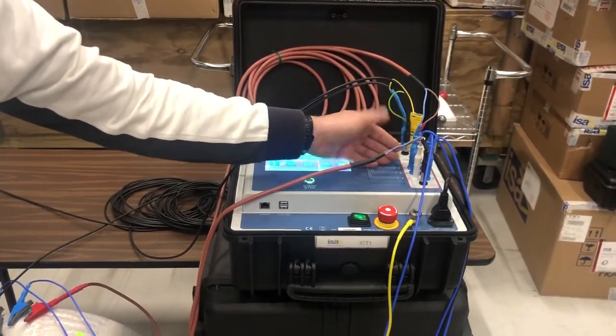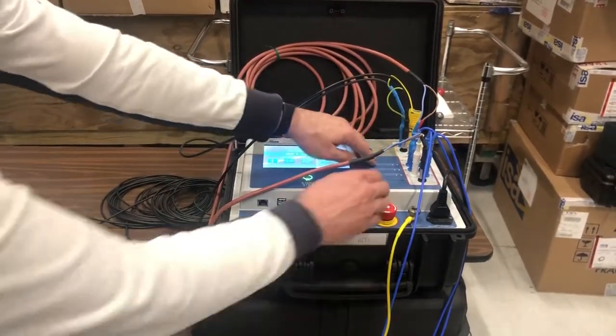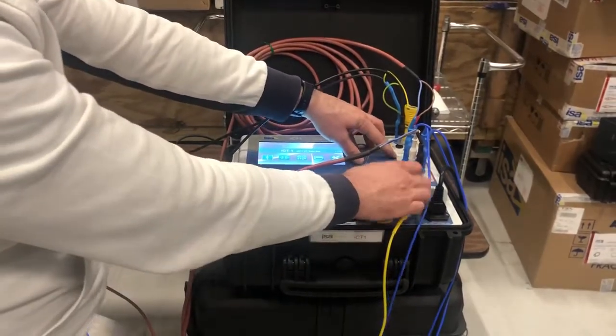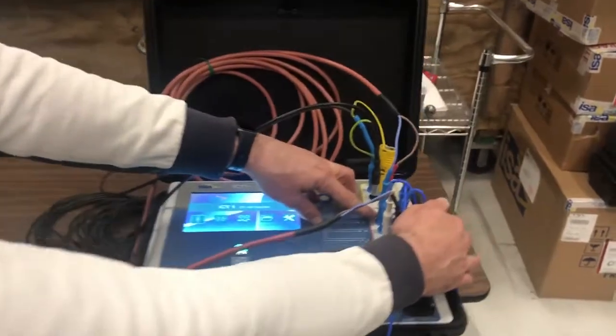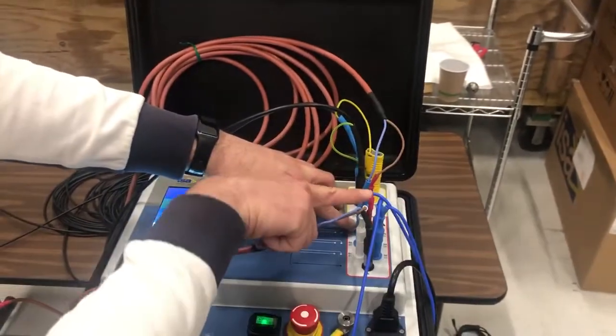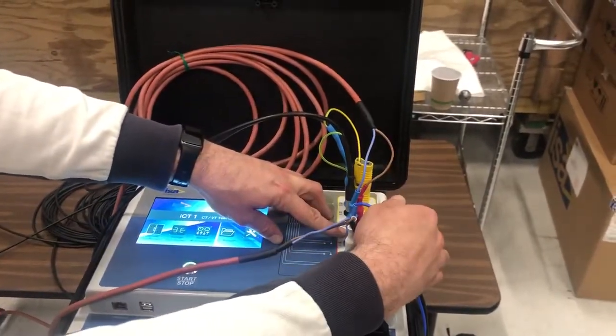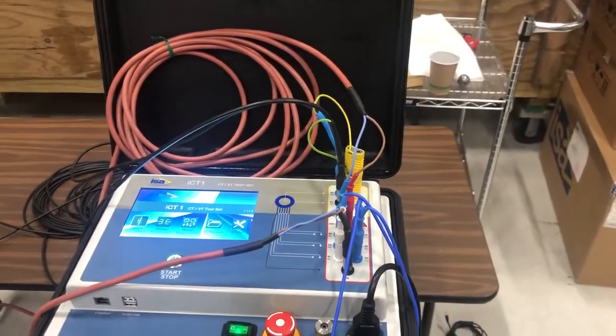All the switching is actually done internally. So first we will be doing, for example, ratio between these two positions, then these two positions, then these two positions, and that's how we do the test.